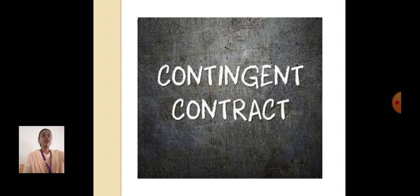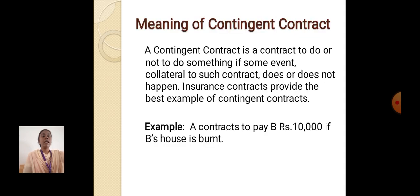Contingent Contract: A contingent contract is a contract to do or not to do something, if some event collateral to such contract does or does not happen. An insurance contract provides the best example of a contingent contract.